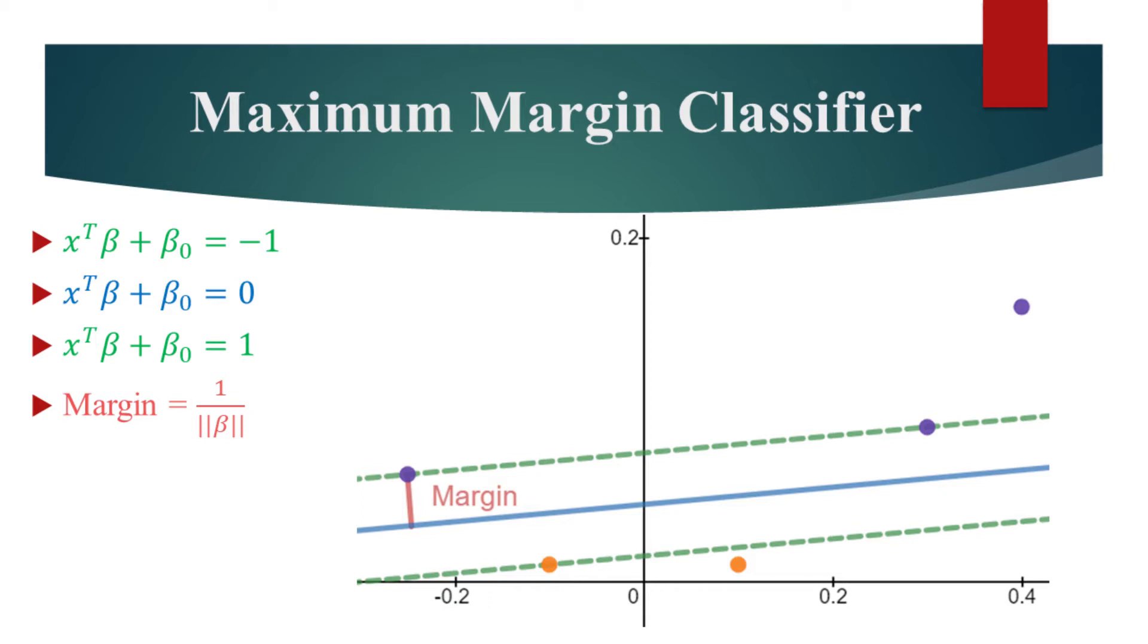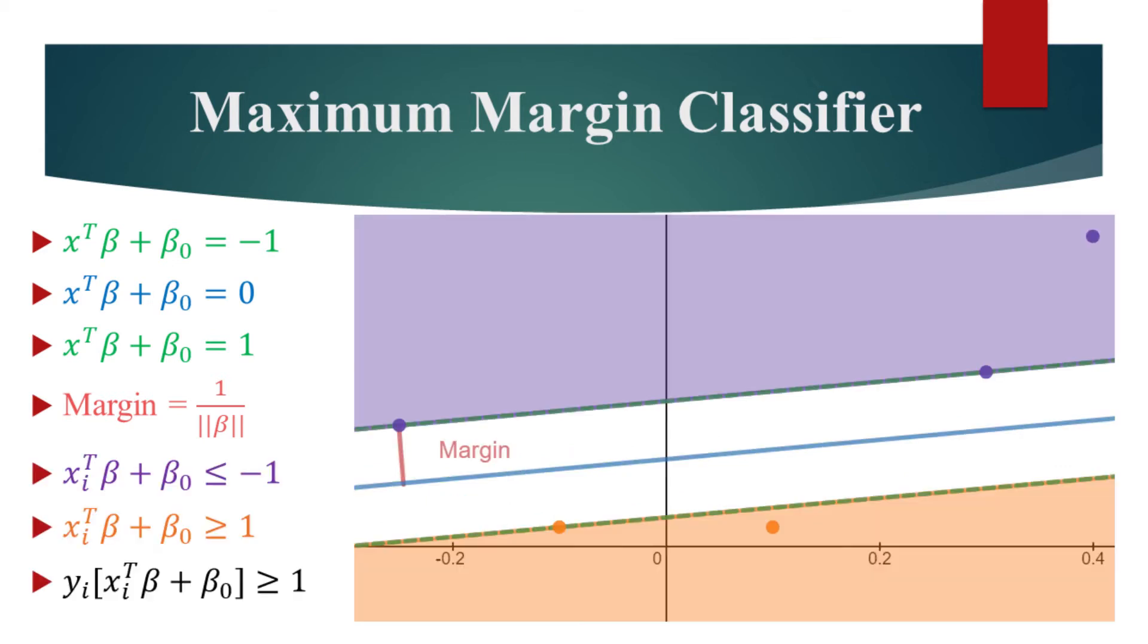Let's now see a numerical example of how we can find this decision boundary. Basically, to find a Maximum Margin Classifier, we have to solve a constraint optimization problem.